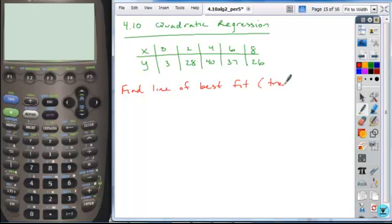Okay, so let's say we take this set of data and I ask you to find the line of best fit, or the trend line. There's two ways that you can do this, right?